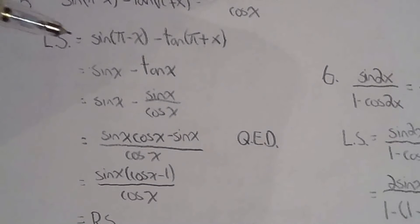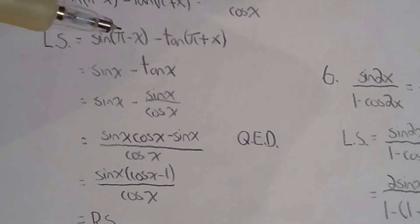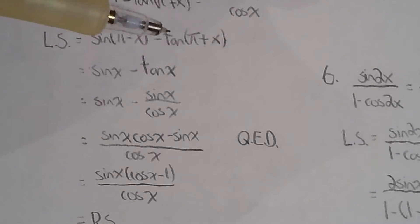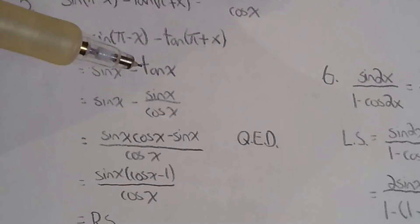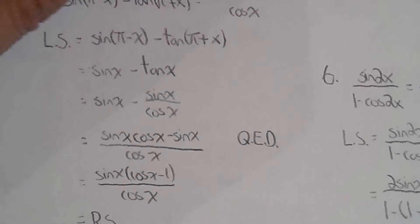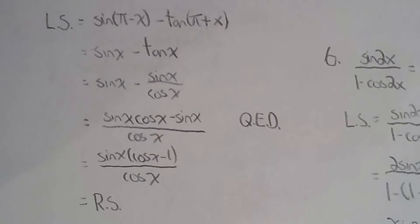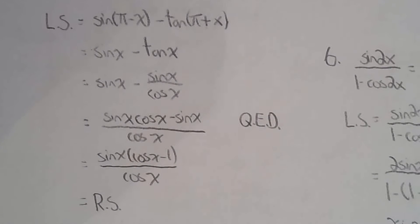For number five, I used equivalent trig expressions. Sine of pi minus x is sine x, and tan of pi plus x is tan x. Then simplify, factor, and you're done.